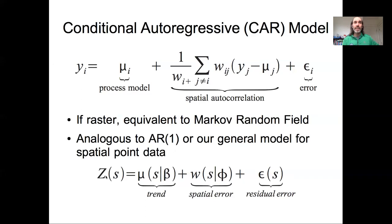At the bottom here we again had our spatial point data model that again had a trend which maps directly to the process model here, has a spatial error which here is based on spatial proximity rather than a spatial covariance matrix and this nugget residual error. So really it's not a radically new concept. The biggest difference we're seeing with spatial block reference data is really just how we define that proximity matrix is slightly different than how we define a spatial covariance matrix when we're dealing with point data.